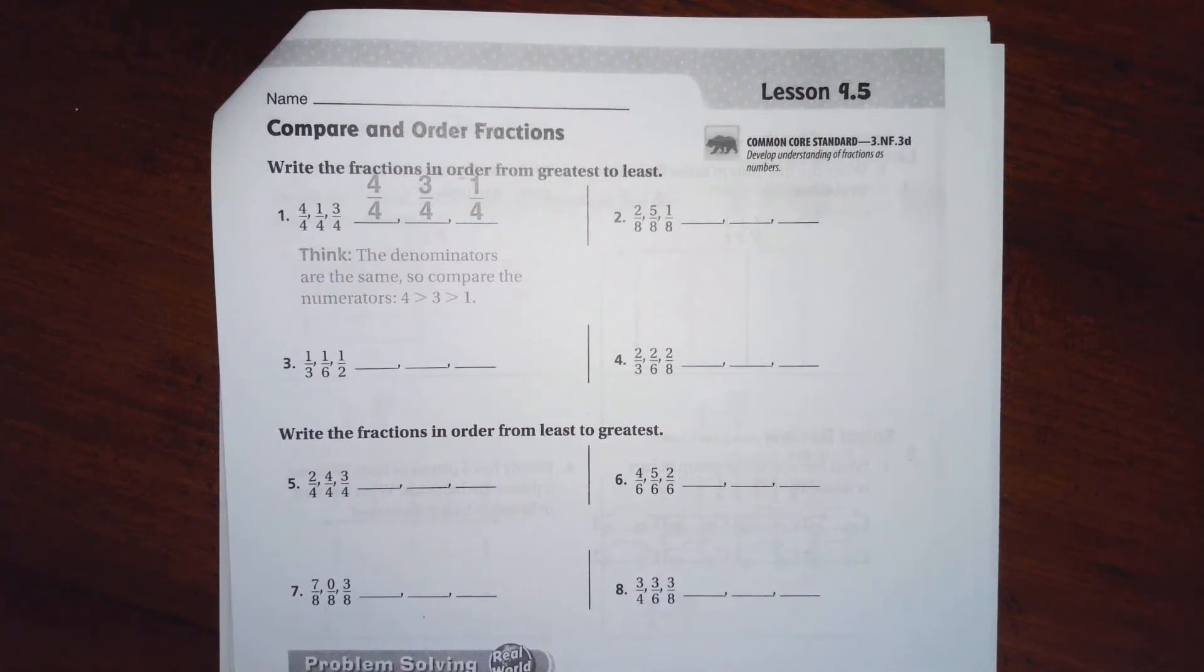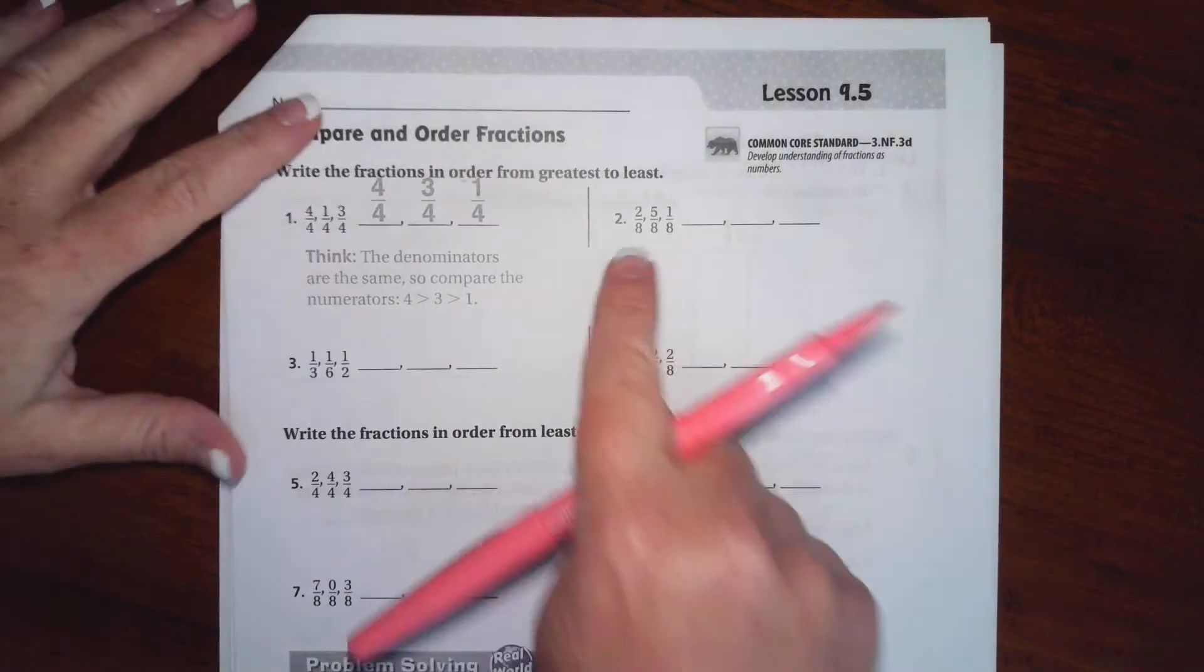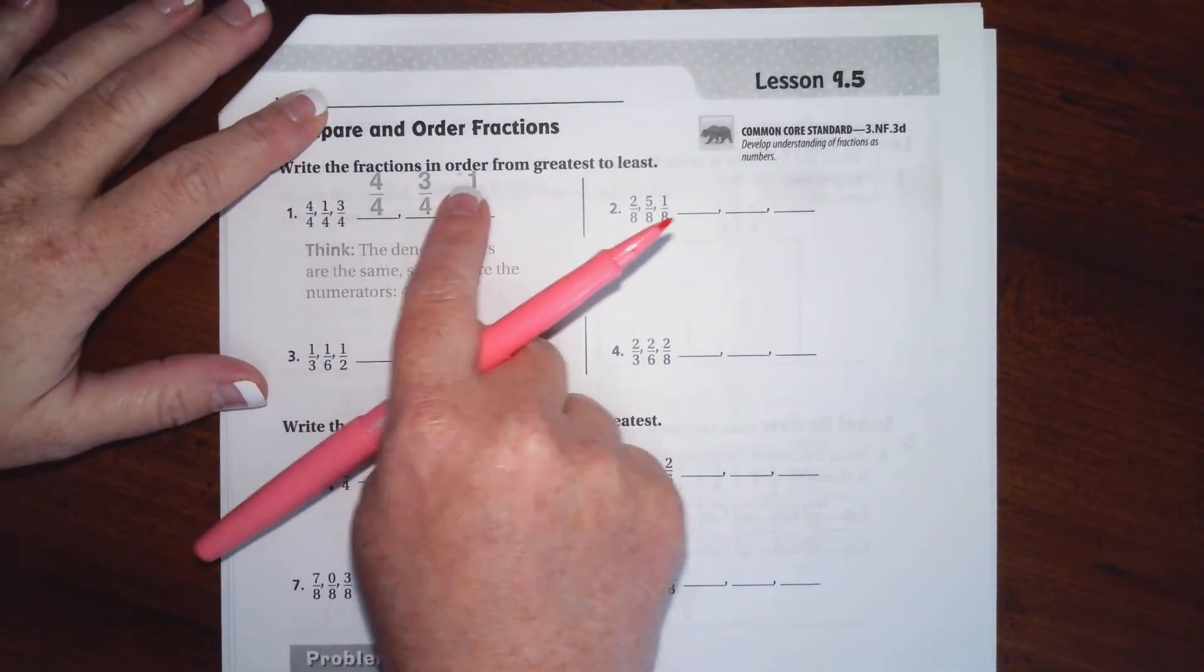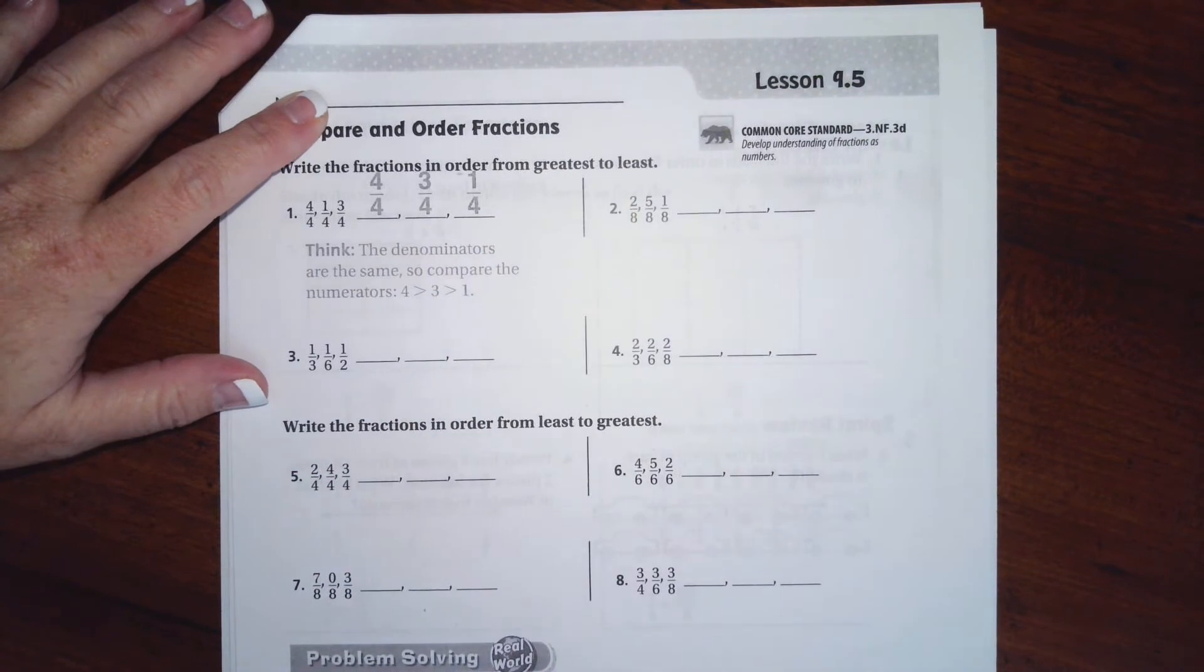Hi guys, welcome to third grade chapter 9 lesson 5. We're going to go ahead and get started. These first ones are going to be pretty easy because they all have the same denominators, and we have eighths for the bottom. We're going to write them in order from greatest to least, or from the biggest to the smallest, when we know that the bottoms are all going to be okay.